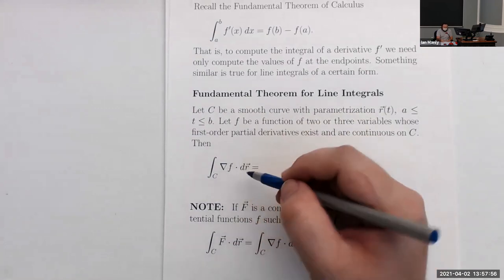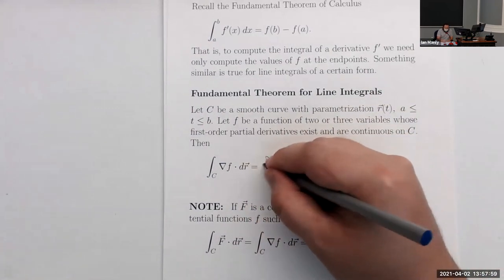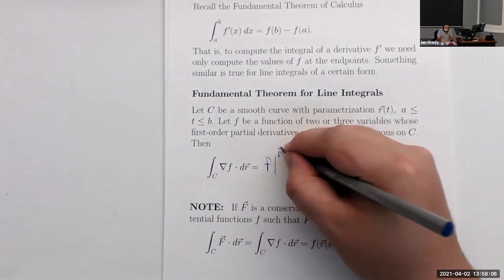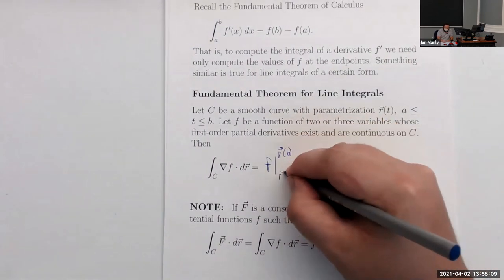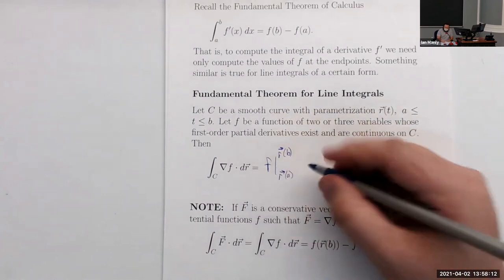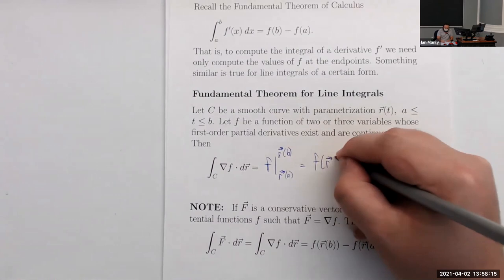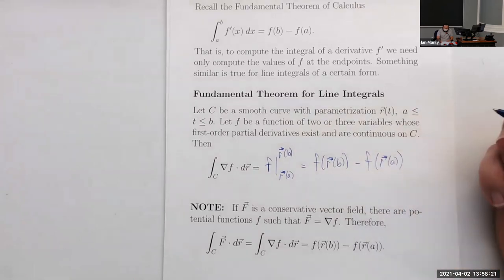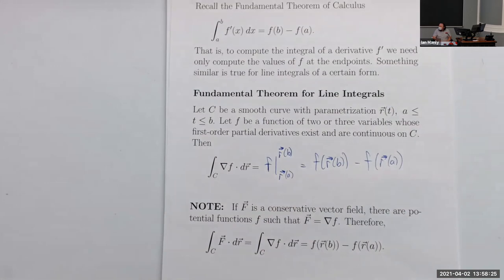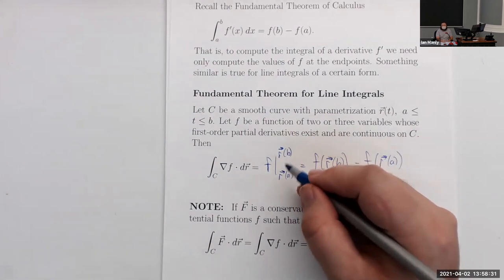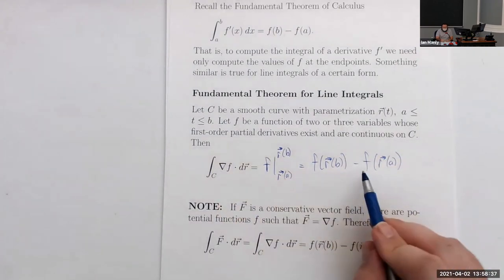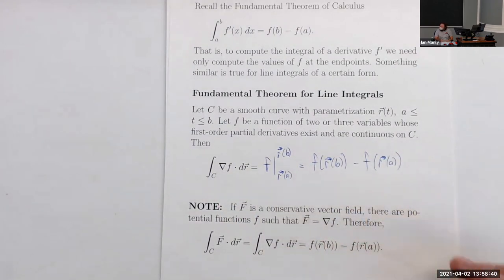Indeed, they do cancel out and we're just left with the function. If there's a parameterization of path c, we have our endpoint minus our initial point plugged into our function: f of r(b) minus f of r(a). This is very similar to the original fundamental theorem of calculus, except now the inputs can have multiple variables. The integral and derivative cancel, leaving just the function values at the endpoints.